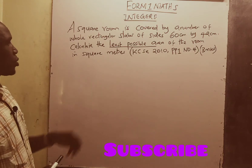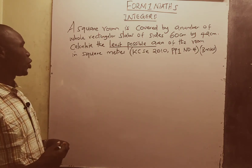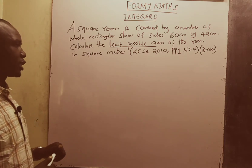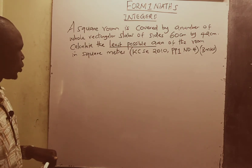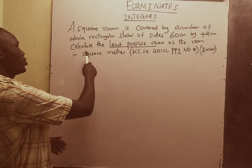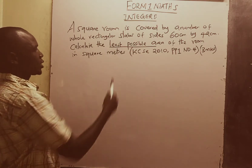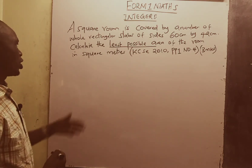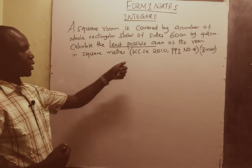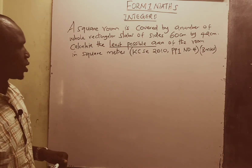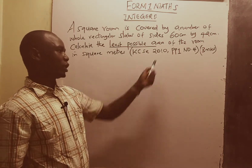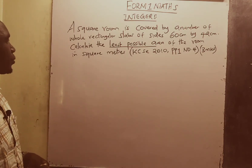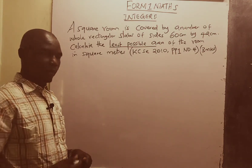The question reads: a square room is covered by a number of whole rectangular slabs of sides 60 centimeters by 42 centimeters. You are supposed to calculate the least possible area of the room in square meters. This was a KCSE question — 2010 Paper 1, question number 4 — and the question had three marks.